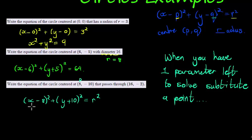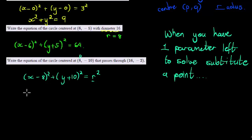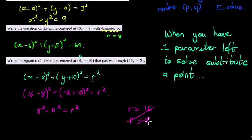In this expression we only have one parameter left to solve, so all we need to do is substitute a point. Not just any point, a point that's actually on that graph. It has to be on that graph. Now they tell us this circle passes through the point (16,-2), which means we can literally substitute it in there. In other words, we can say x is 16 minus 8 squared plus y is negative 2 plus 10 squared is equal to r squared. What do we get? So this is 8, 8 squared plus 8 squared is equal to r squared.